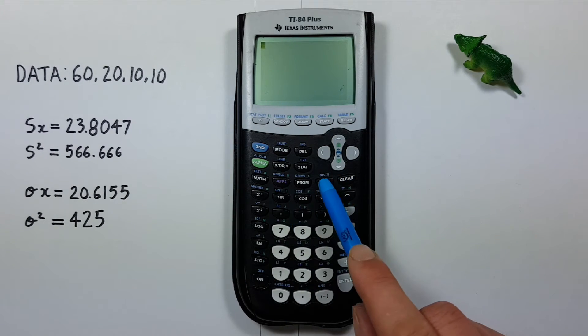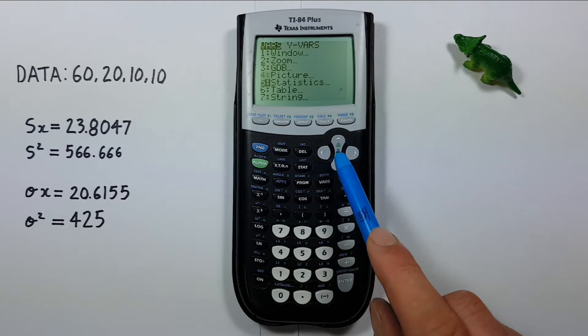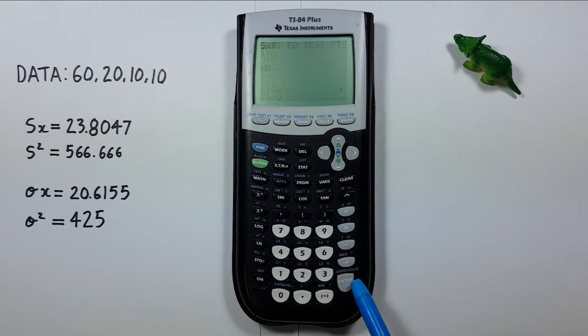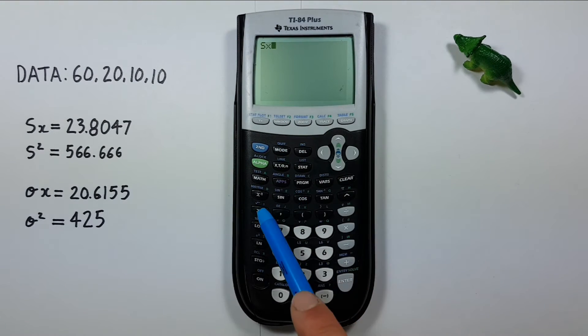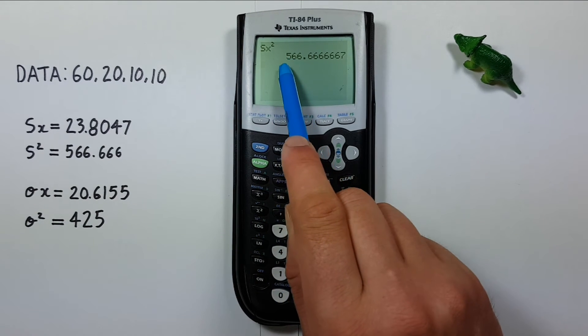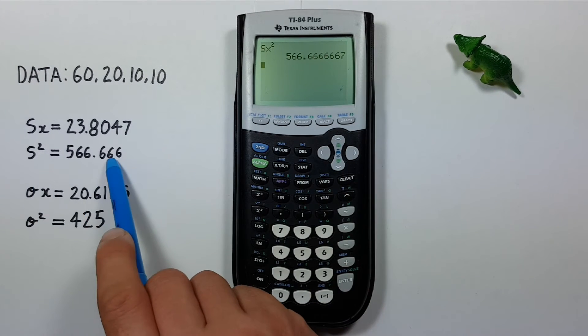We know the variance is the standard deviation squared. So if we place the sample standard deviation back on our screen and square it, press ENTER, we see we get a variance of 566.666 etc. Which is correct.